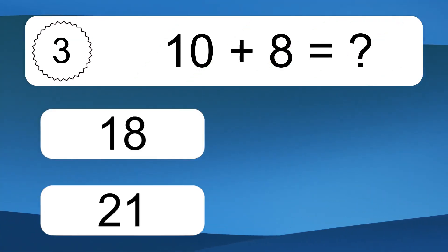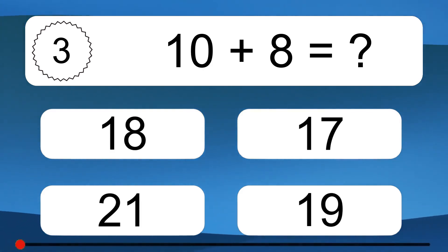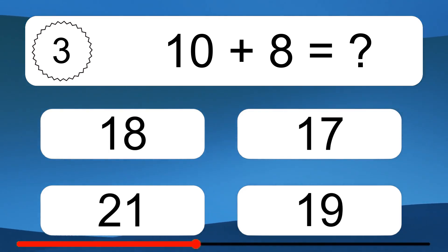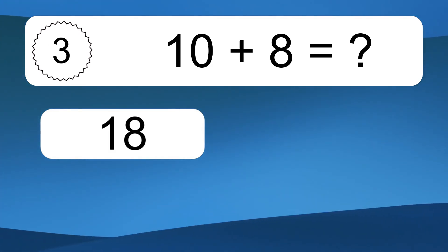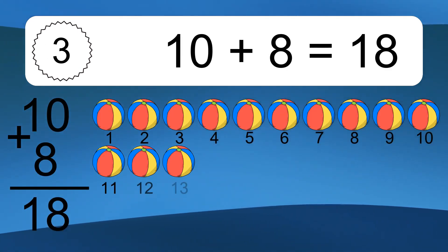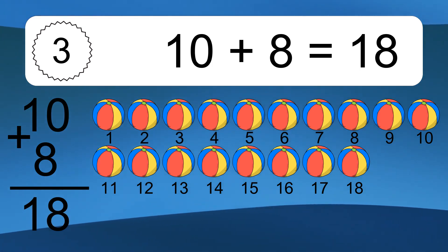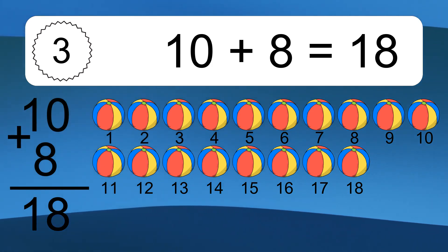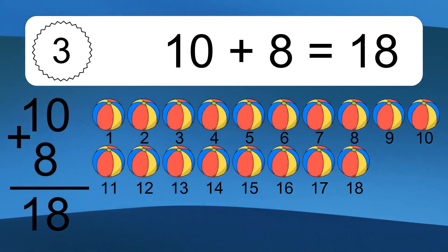10 plus 8 equals what? 10 plus 8 equals 18. Let's count it. 1, 2, 3, 4, 5, 6, 7, 8, 9, 10, 11, 12, 13, 14, 15, 16, 17.